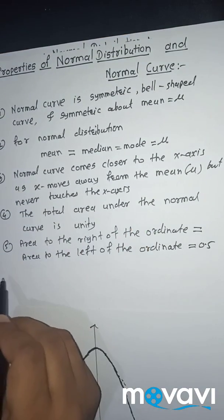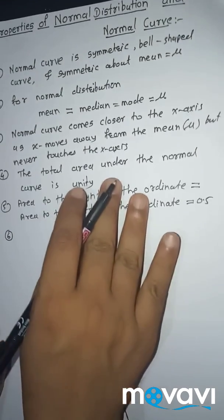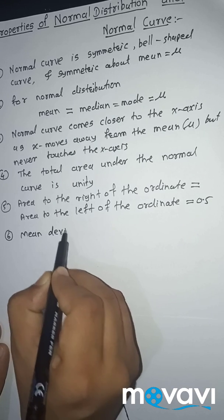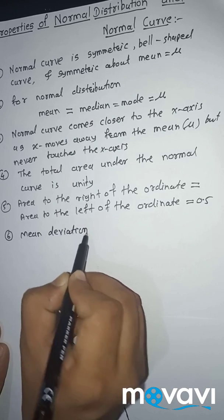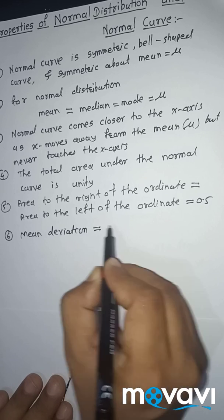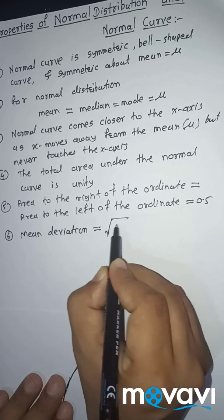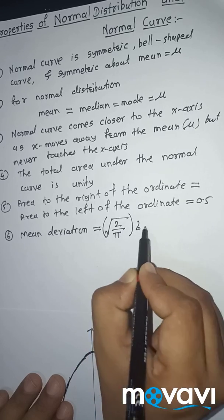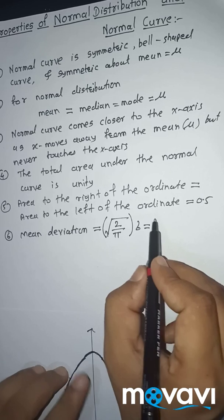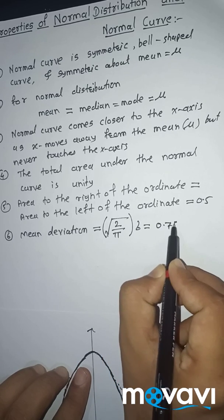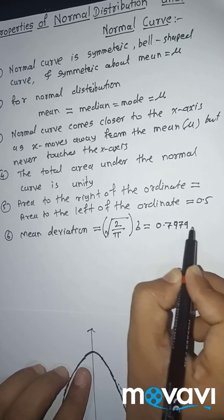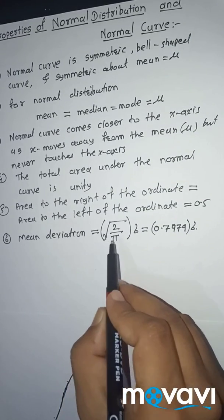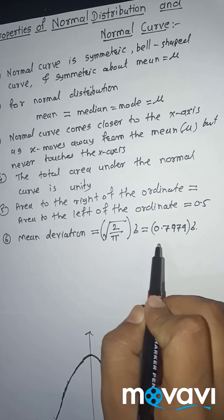Fifth property: the mean deviation of this distribution is √(2/π) into σ. The value of √(2/π) is 0.7979, so mean deviation equals 0.7979 × σ.